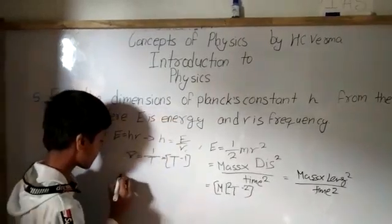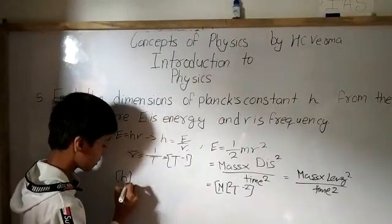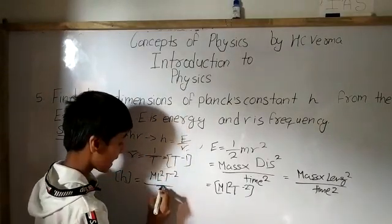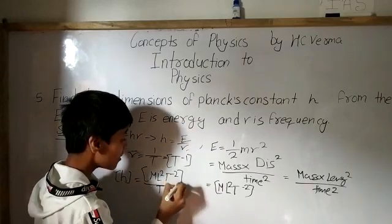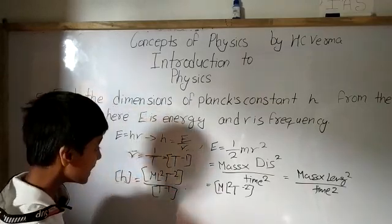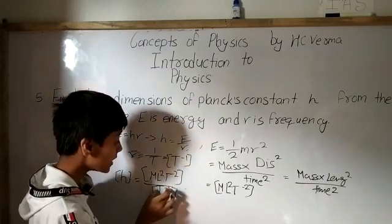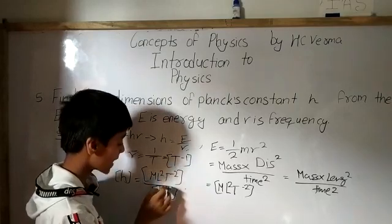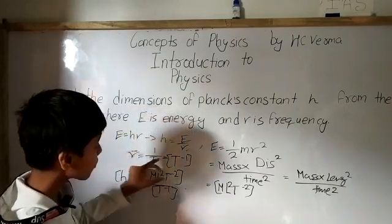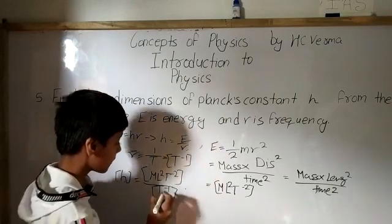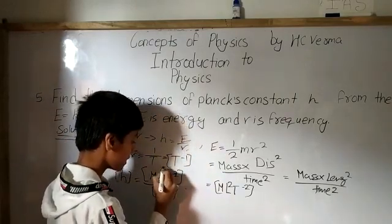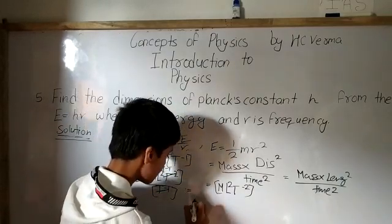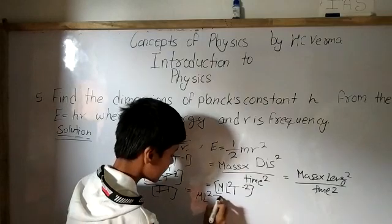Now we divide the dimensions to find Planck's constant. H equals M L squared T to the power minus 2, divided by T to the power minus 1. In physics, when dividing dimensional formulas, only matching quantities divide each other. So T power minus 2 divided by T power minus 1 gives T power minus 1. Therefore, the dimensional formula for H is M L squared T to the power minus 1.